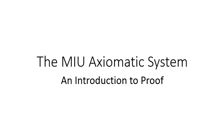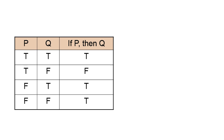Before talking about MIU, let's first talk about the objective, which is proof. In MIU we're going to try to show that a particular conditional statement — if P, then Q — is true. So our objective is to show that the conditional statement P implies Q is true.